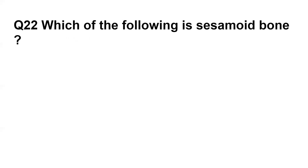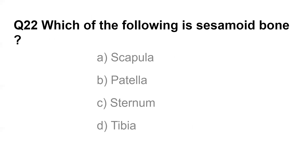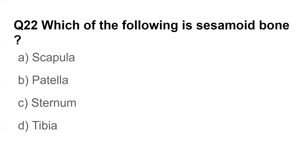Question number twenty-two: Which of the following is a sesamoid bone? Options are scapula, patella, sternum, and tibia. The answer is patella, which is the largest sesamoid bone in our body.